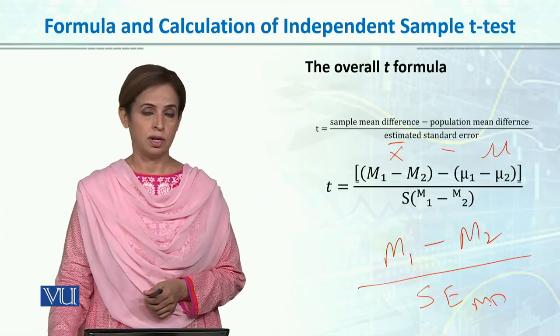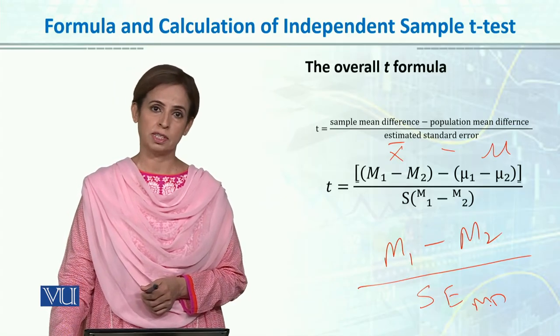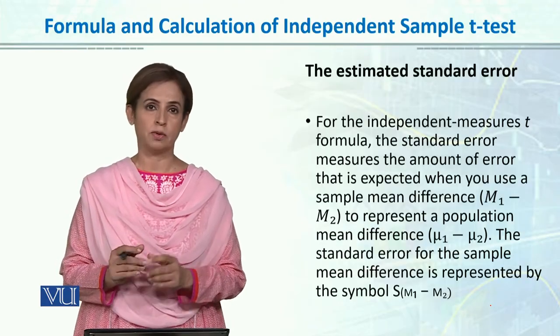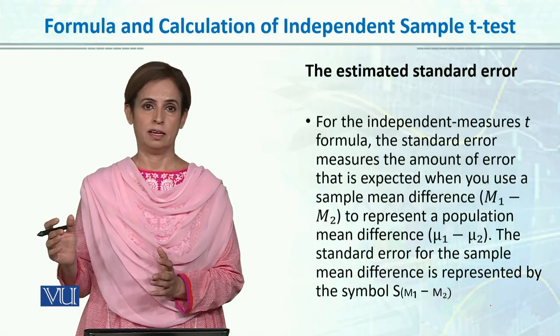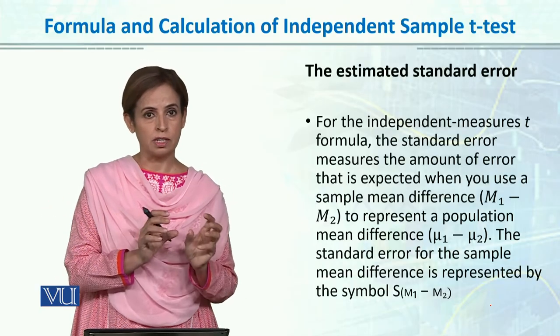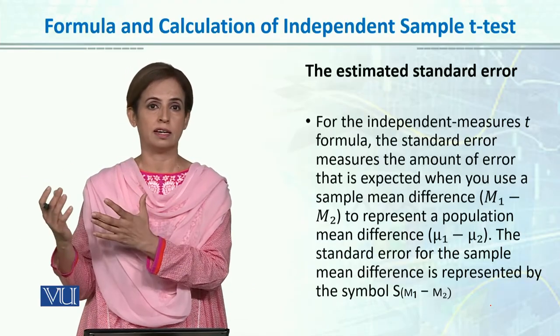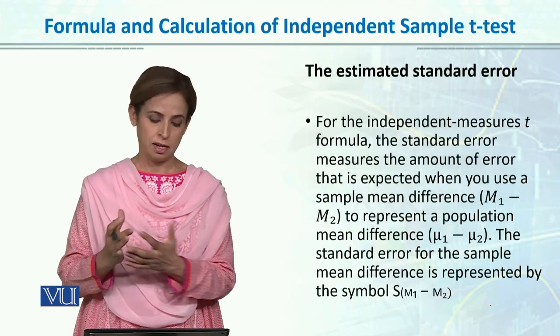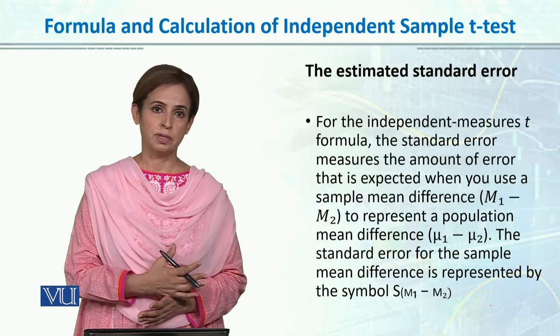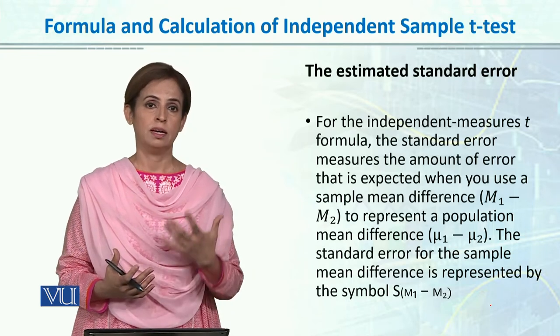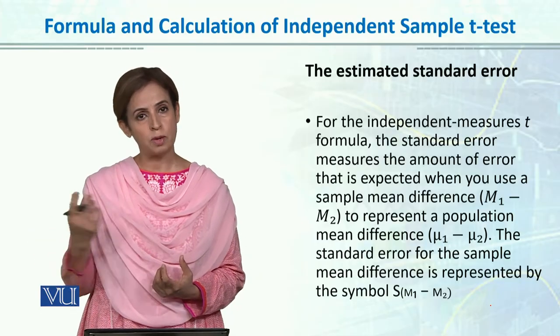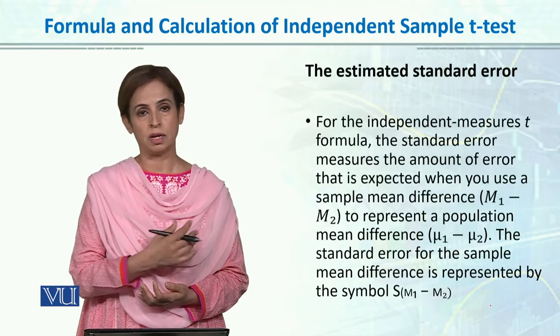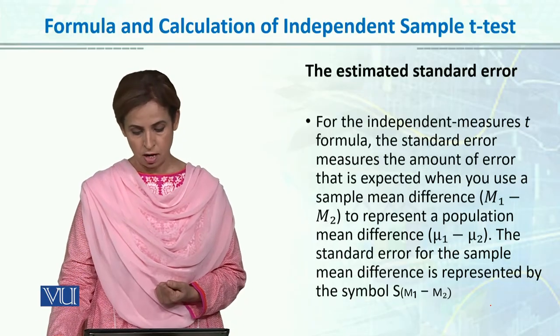To calculate standard error, we need to understand the formula. Standard error is basically the amount of error that is expected because we are estimating population from sample. We found the difference between boys and girls in our sample, but if we study the entire population, there is definitely a value that exists which is beyond the scope we cannot actually study. We cannot take the entire population and study it.